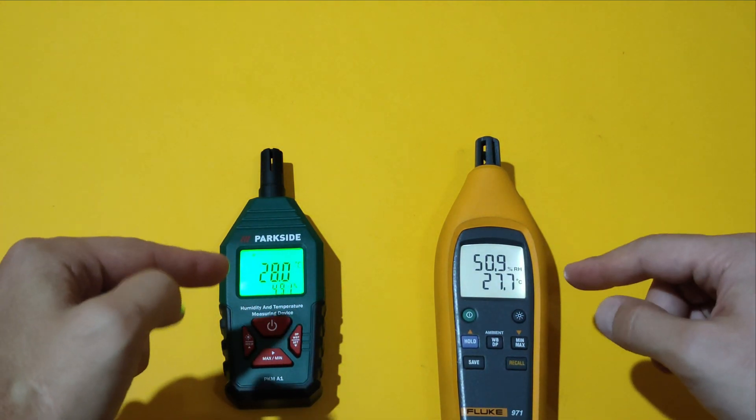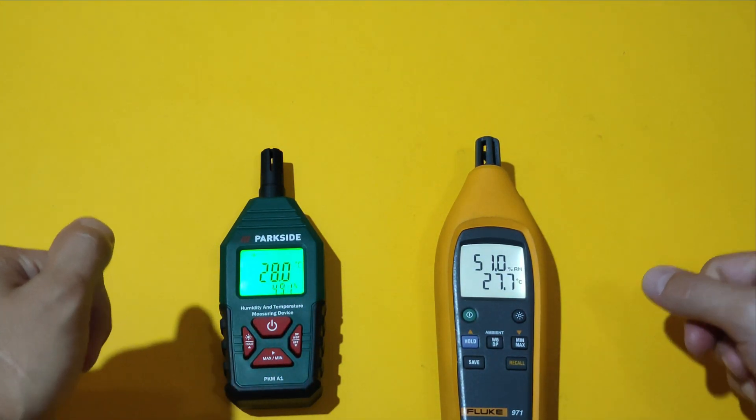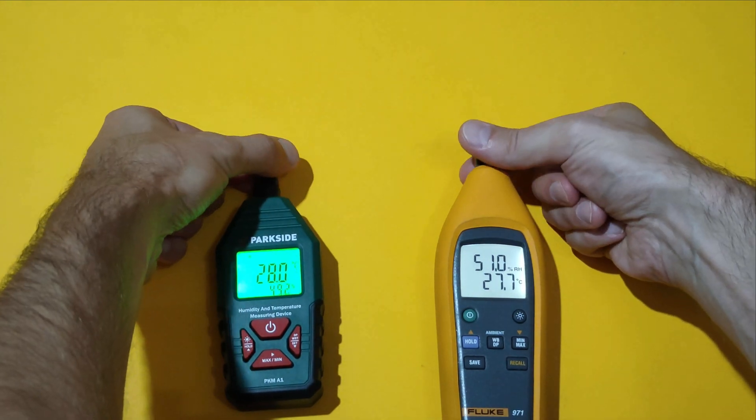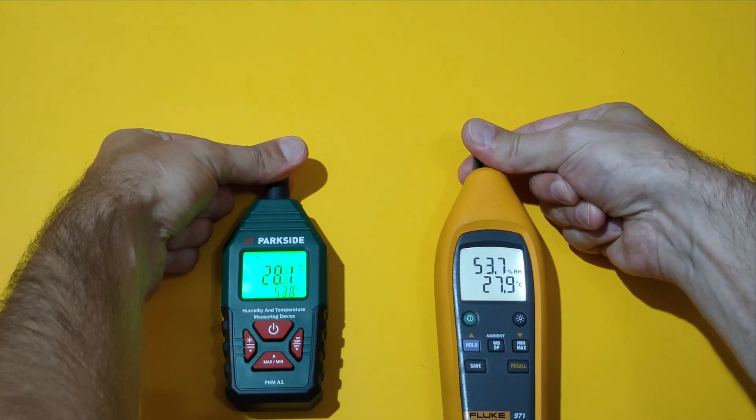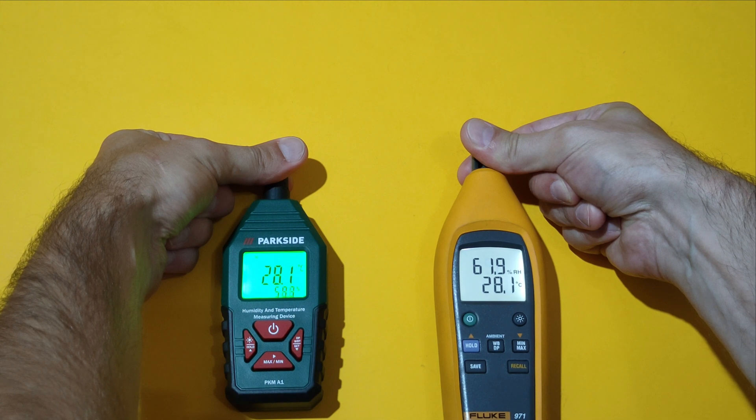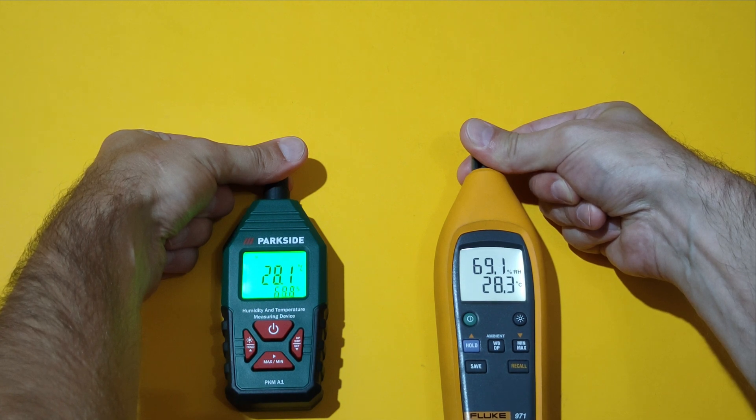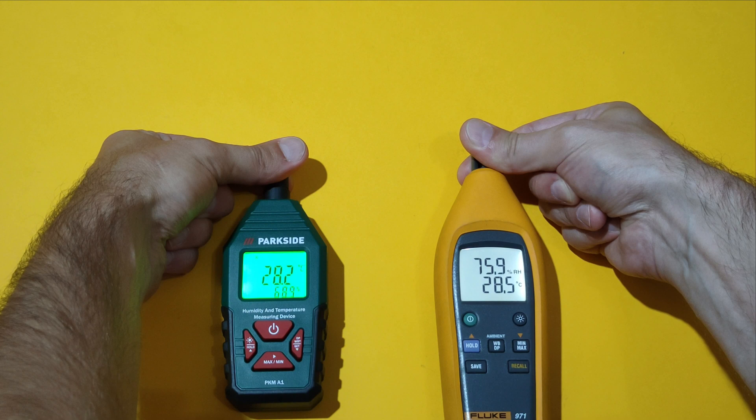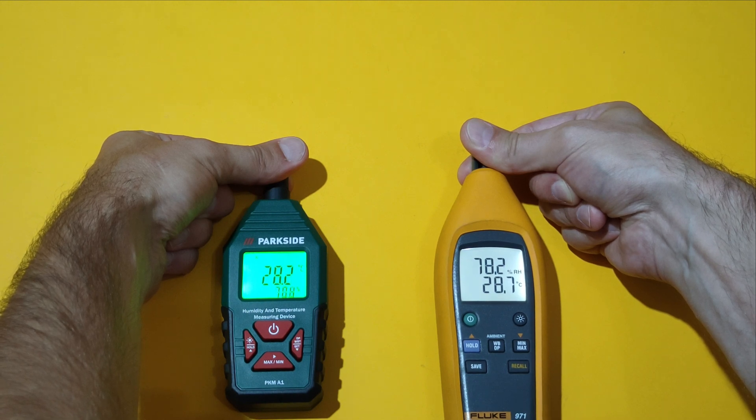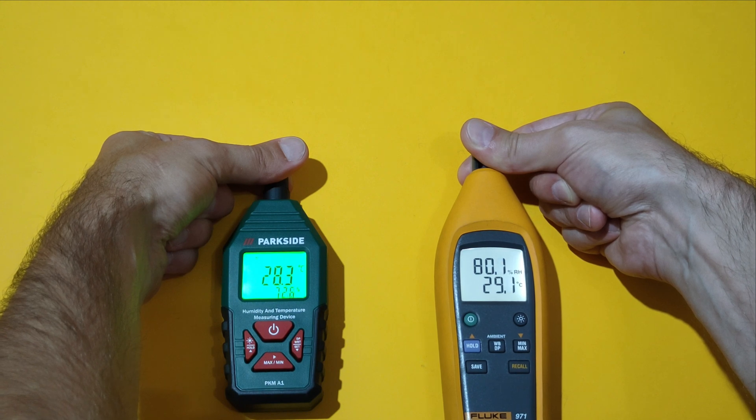Observe how the readings on the both devices are changing. As you can see, the readings on the Fluke are changing way faster.